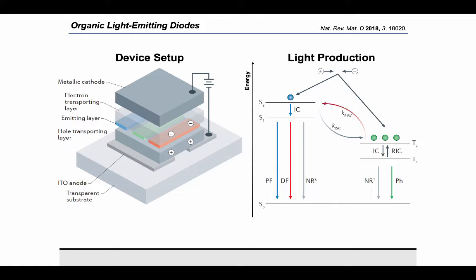Depending on the type of emitter, light production either takes place via fluorescence from the first excited singlet or via phosphorescence from the first excited triplet.